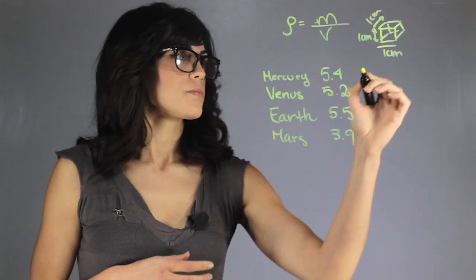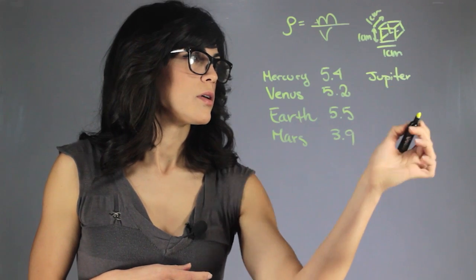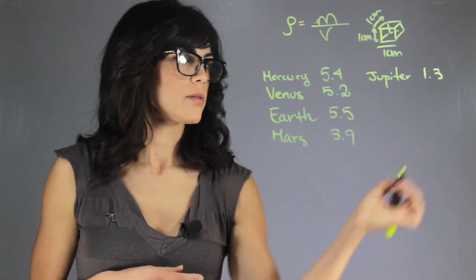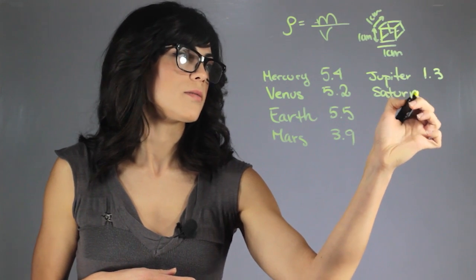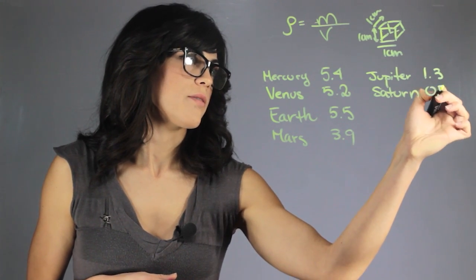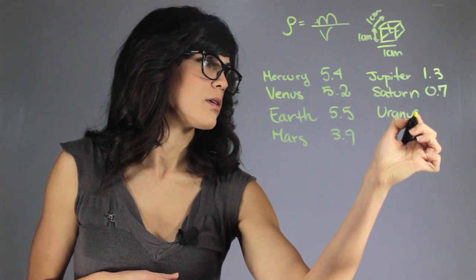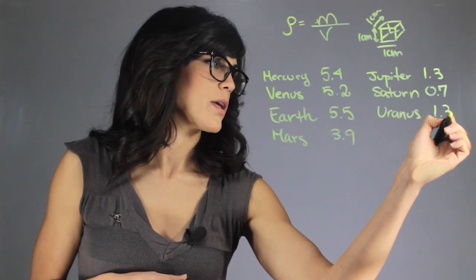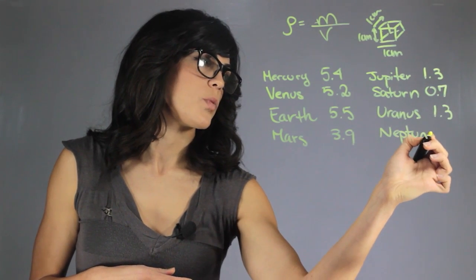Let's look at the outer planets. Jupiter is only 1.3. Saturn, which is the least dense, is 0.7. Uranus is 1.3 again. And Neptune is 1.6.